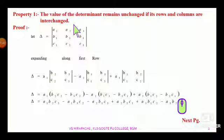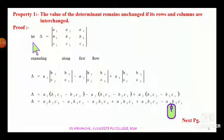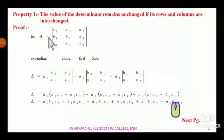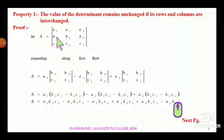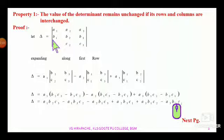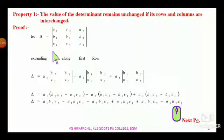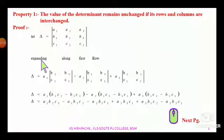We will go for the verification or the proof of the theorem. Let me begin with one determinant of third order. Let delta be equal to a determinant of third order. The first row elements are a1, a2, a3; second row elements are b1, b2, b3; and c1, c2, c3. Let me expand this determinant along the first row.